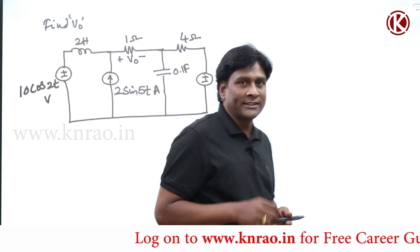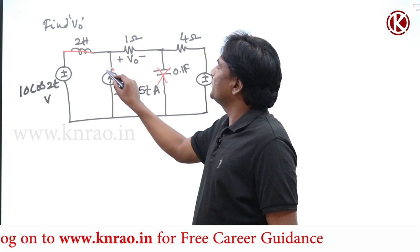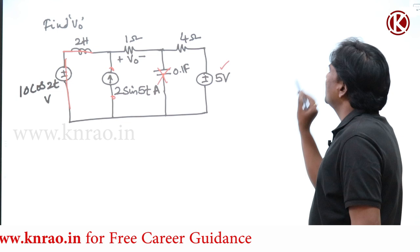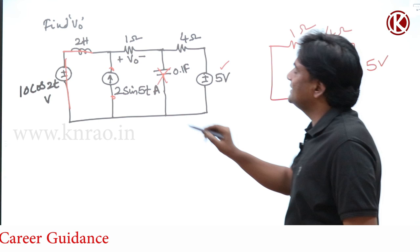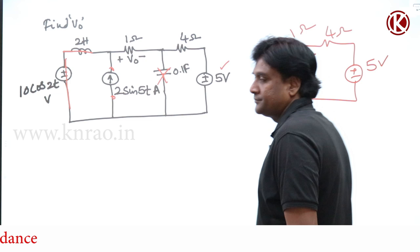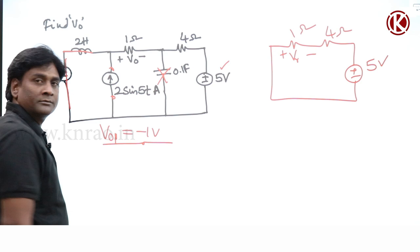For DC (ω=0): the capacitor will be open circuit, the inductor will be short circuit. Considering only the voltage source, the current source will be open circuit. The network becomes 1 ohm, 4 ohm, and 5 ohm. Voltage across v_naught for the first case, considering 5 volts only, is going to be minus 1 volt.